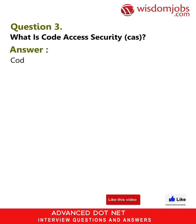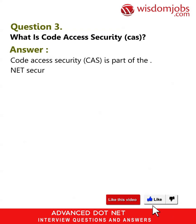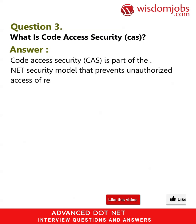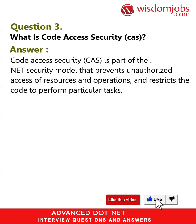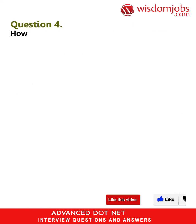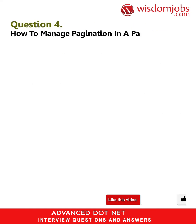Question 3: What is Code Access Security (CAS)? Answer: Code Access Security (CAS) is part of the .NET security model that prevents unauthorized access of resources and operations and restricts the code to perform particular tasks.